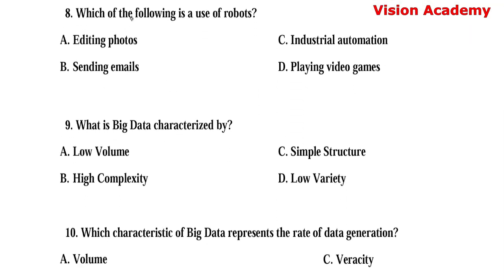Question number 8. Which of the following is a use of robots? Option A: Editing photos. Option B: Sending emails. Option C: Industrial automation. Option D: Playing video games. Here, option C, industrial automation, is the right answer.